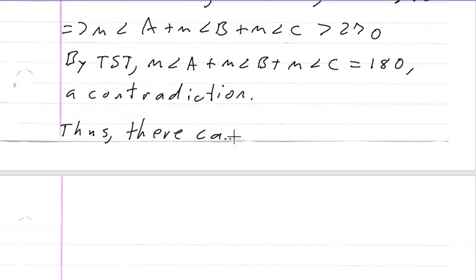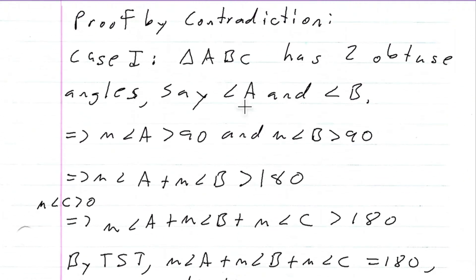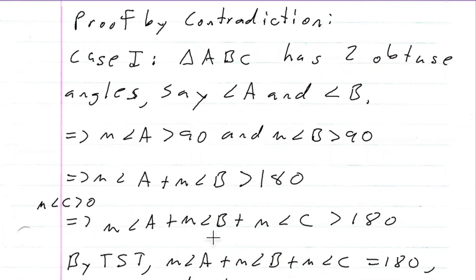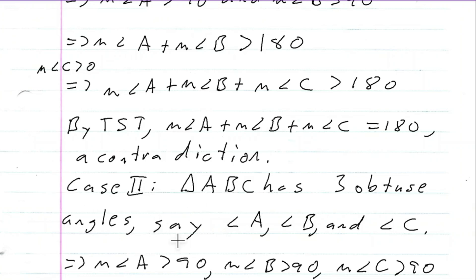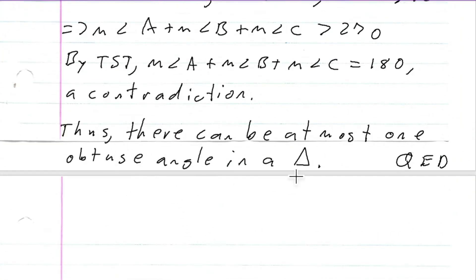Thus, there can be at most one obtuse angle in a triangle, and that's our proof. We tried to have two obtuse angles and failed — it led to a contradiction. We tried to have three obtuse angles and that led to a contradiction as well. So you can only have at most one obtuse angle in a triangle.